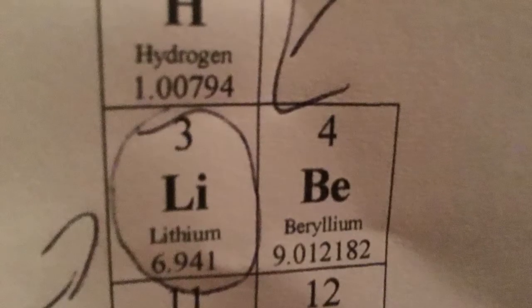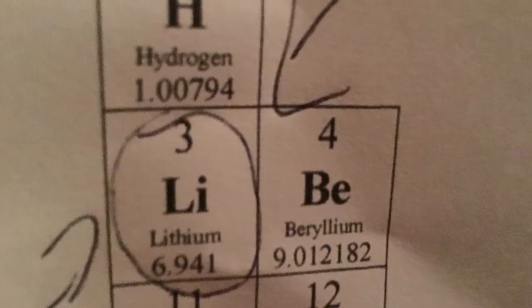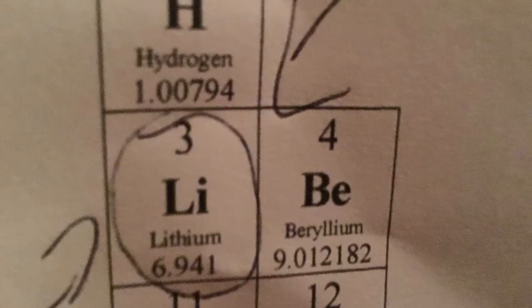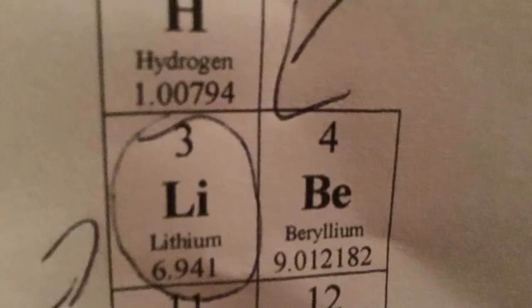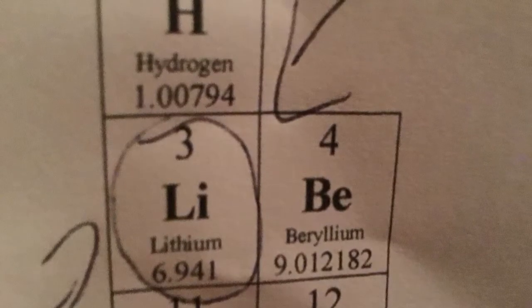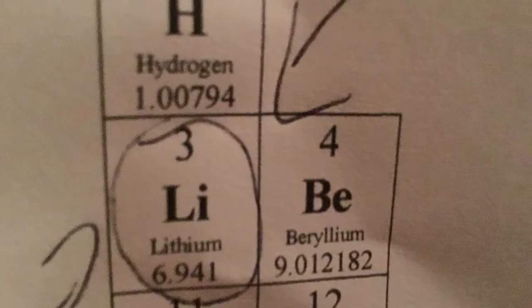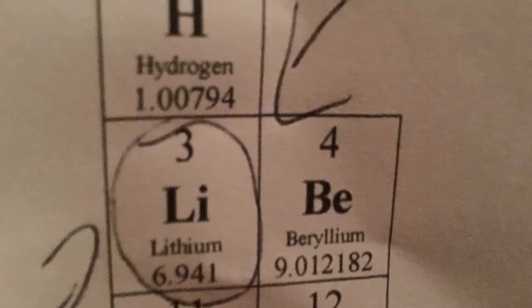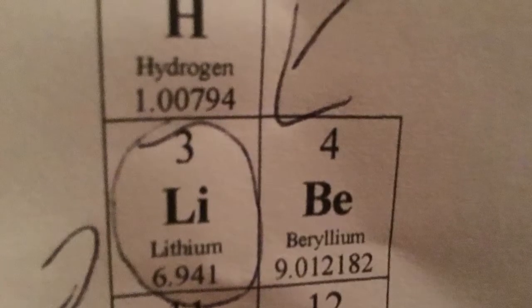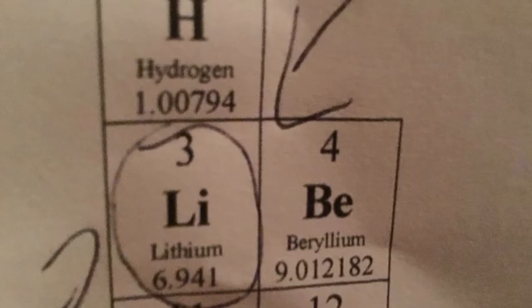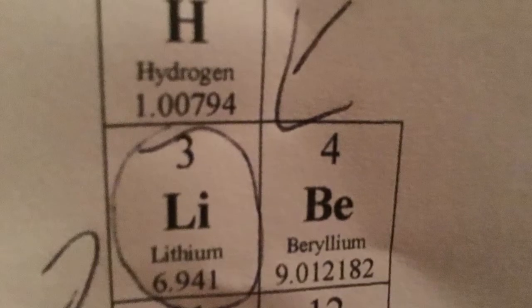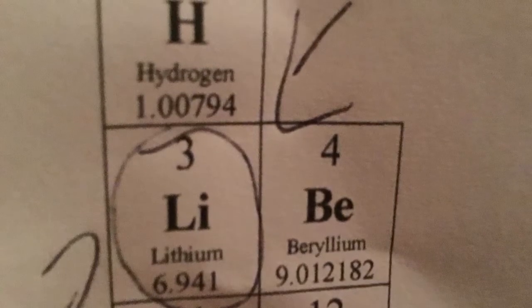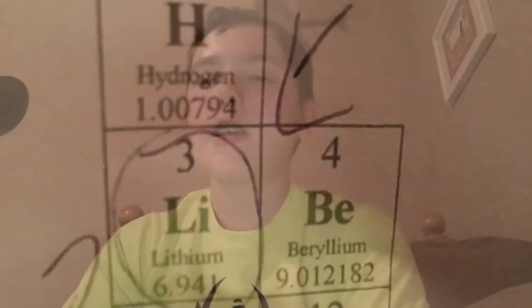The next part is very simple. You just subtract the atomic number by the atomic mass and it will equal 4, and those will be the neutrons, so 4 neutrons. So we can see that lithium has 3 protons, 3 electrons, and 4 neutrons. Thank you for watching.